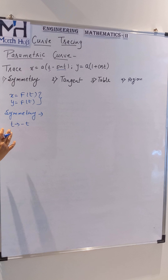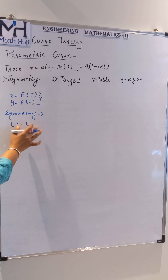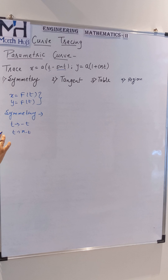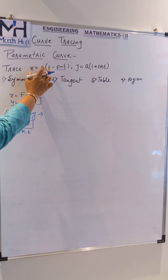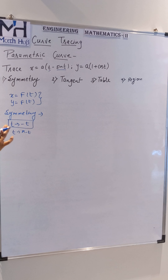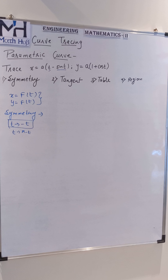In short, there are basically two types of symmetry we check in a given equation. One is T changes to minus T, and the other is T changes to pi minus T. When we apply T changes to minus T, if the equation has an algebraic function — even combined with a trigonometric one — we need to apply only this rule.